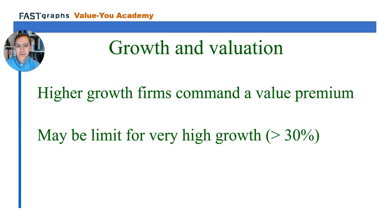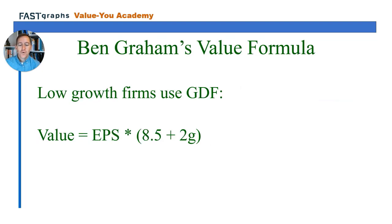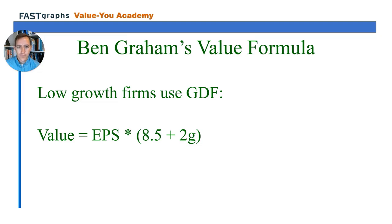There may be a limit for very high growth. In FastGraphs, the upper bound is set at 30% — for firms growing faster than 30%, the PE ratio is still set at 30. For lower growth firms, we want to use Ben Graham's value formula, or the Graham-Dodd formula. This says the value of a stock equals EPS multiplied by 8.5 plus 2 times the growth rate — a direct mathematical link between growth and value.